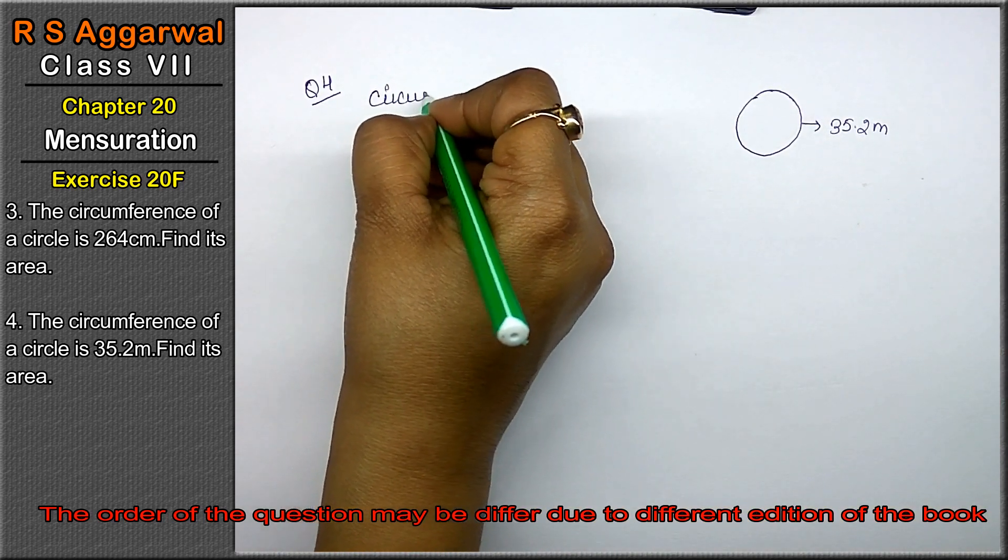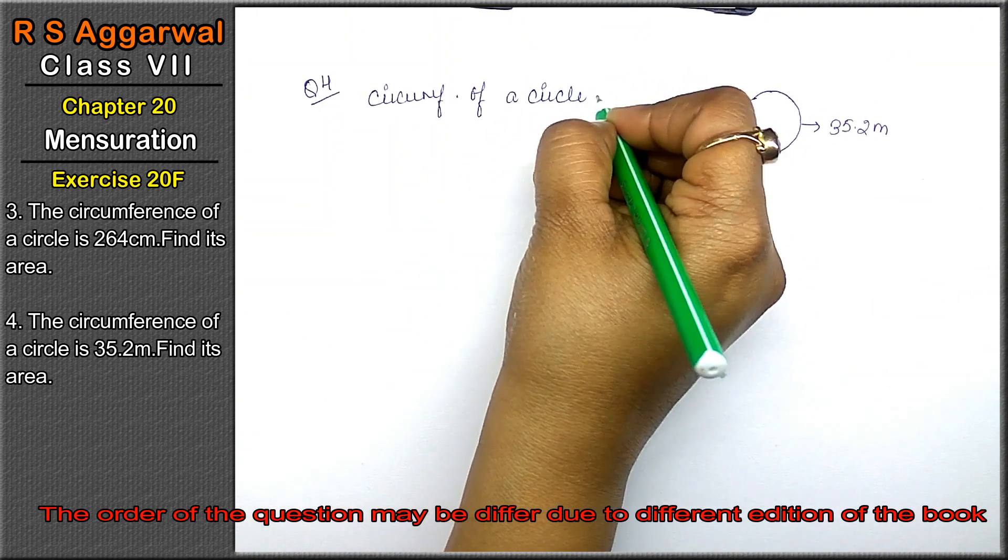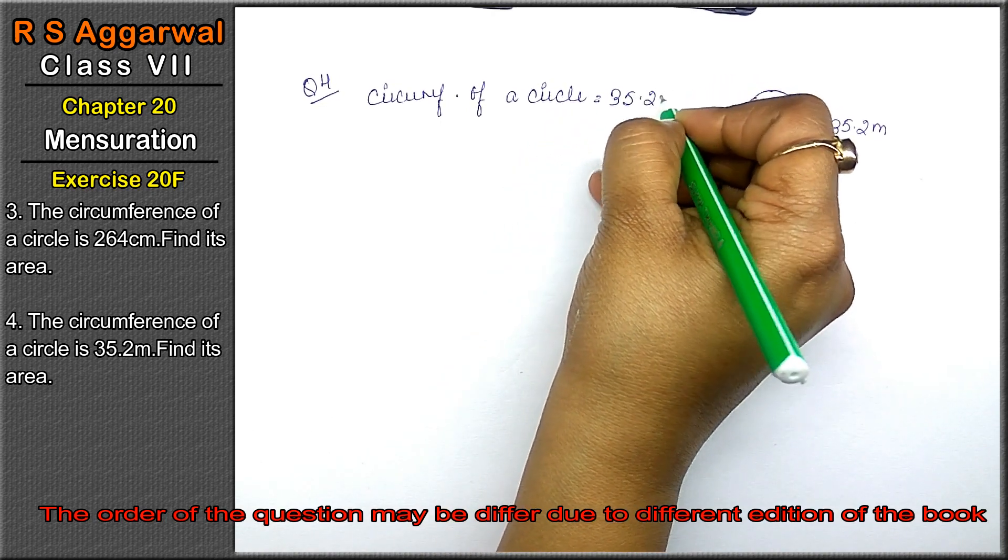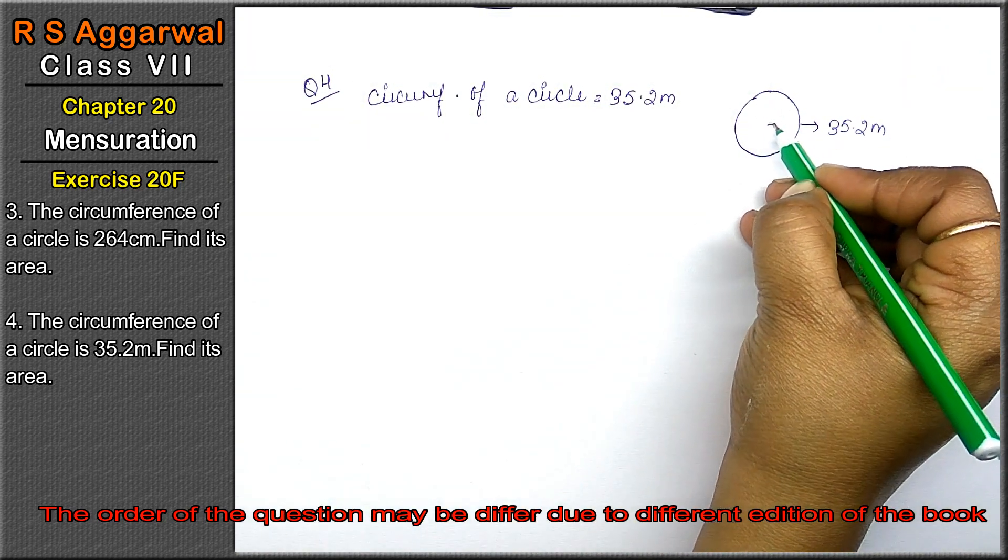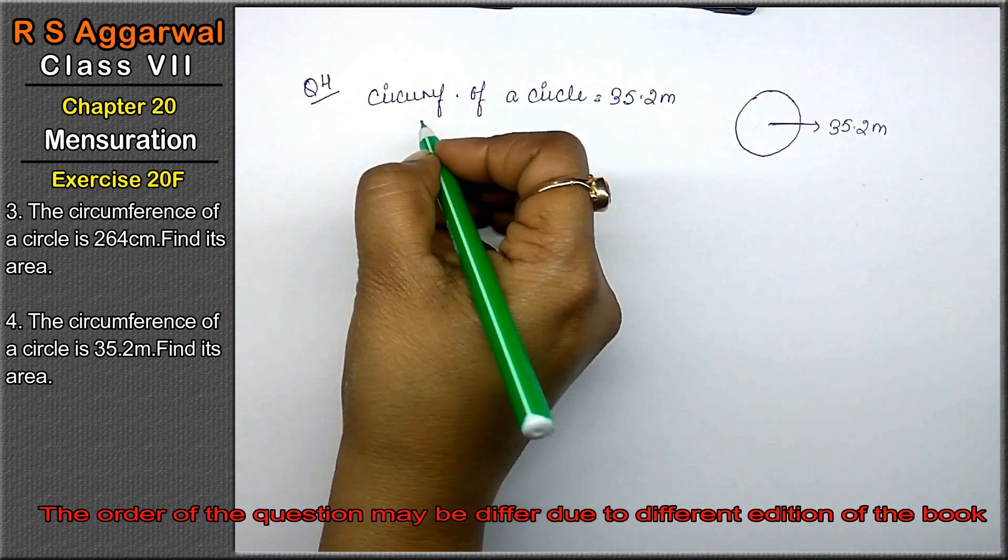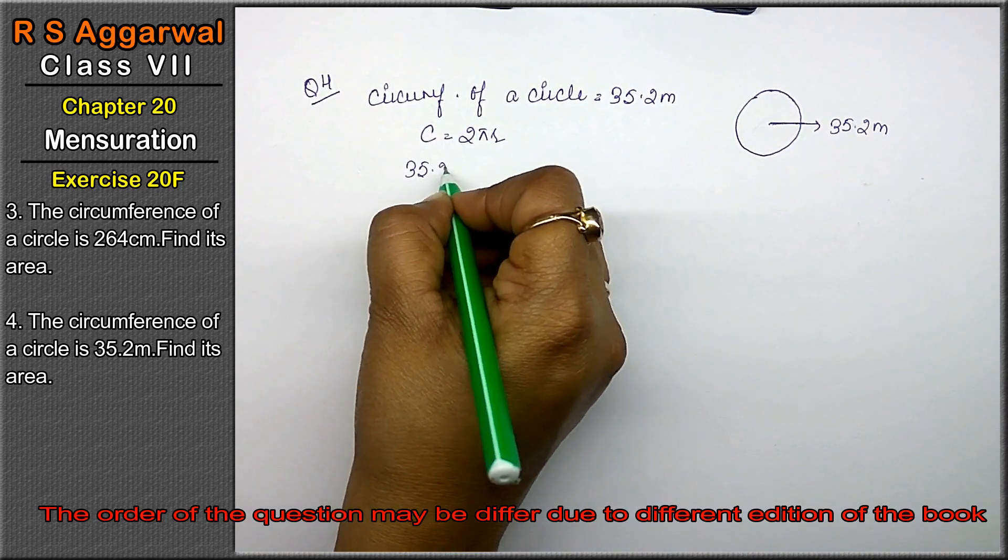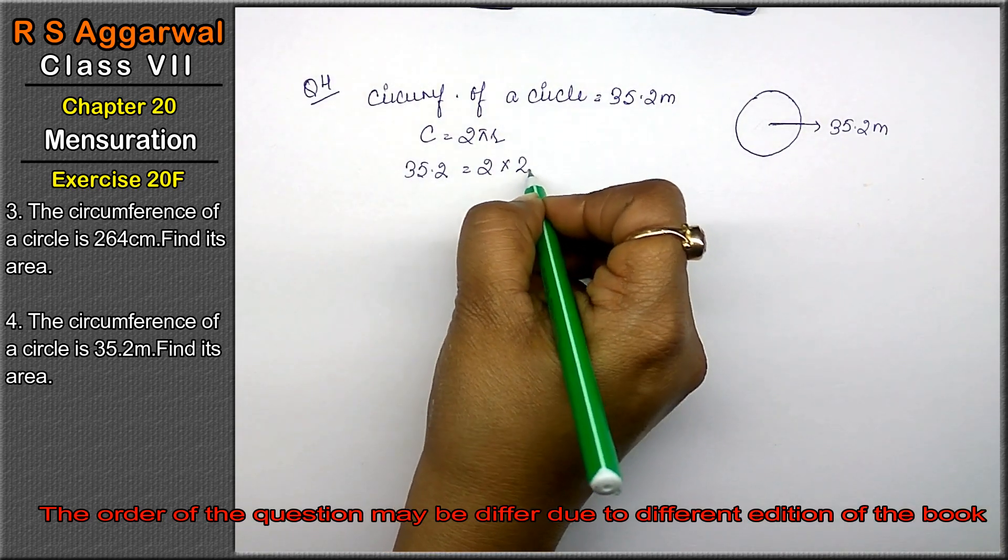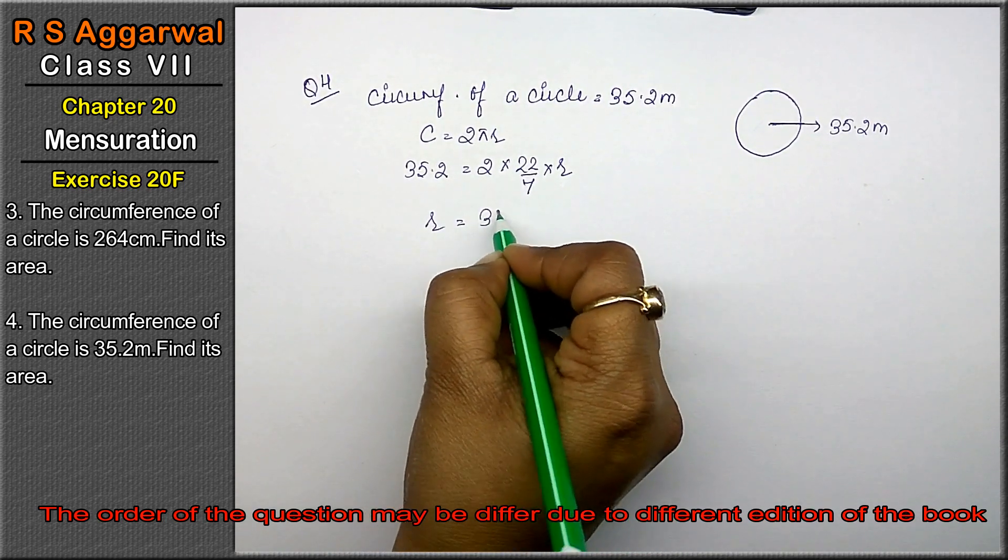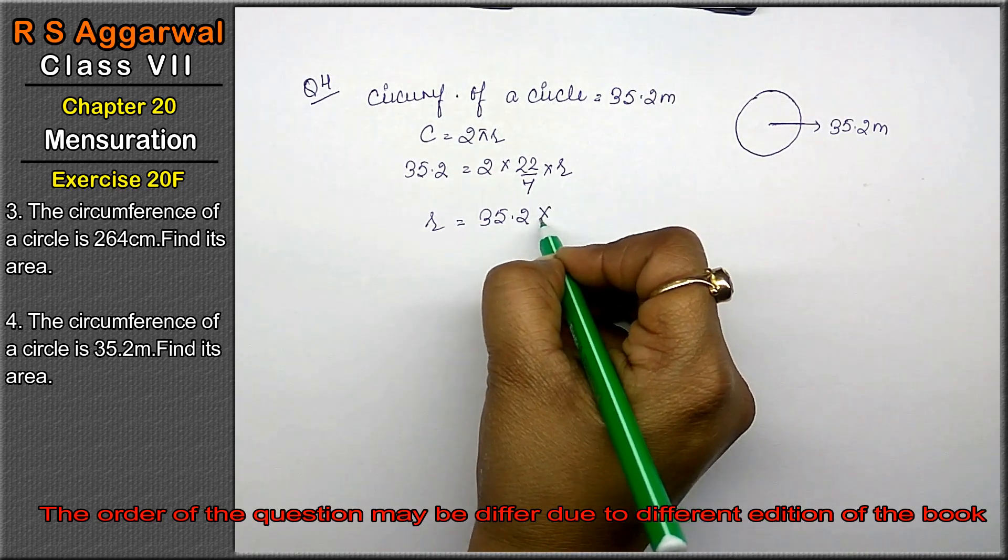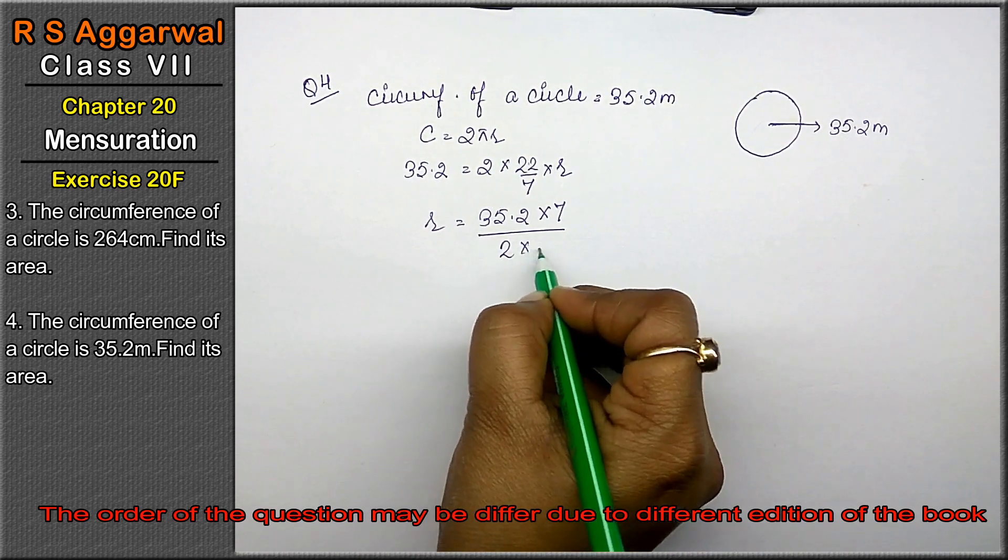Now circumference of a circle equals to 35.2 meter. Now we have to find out the radius. C ka formula hata hai 2 pi r. So C humehen pata hai 35.2 meter equals to 2 as it is. Pi ki value 22 upon 7. R ki value R hi rakhhinge. Now r as it is 35.2 as it is. 7 idha divide me tha to multiply me chala gya. 2 into 22 multiply me r ke saad to idha rake divide me a gya. Right friends?